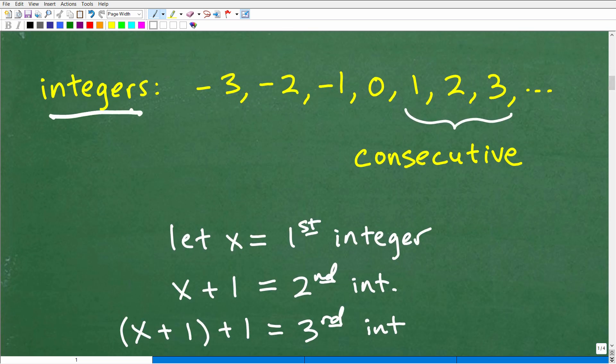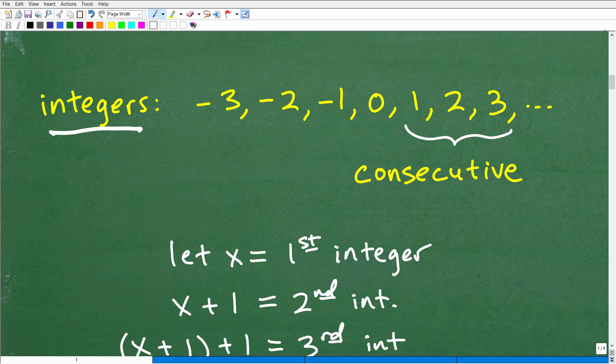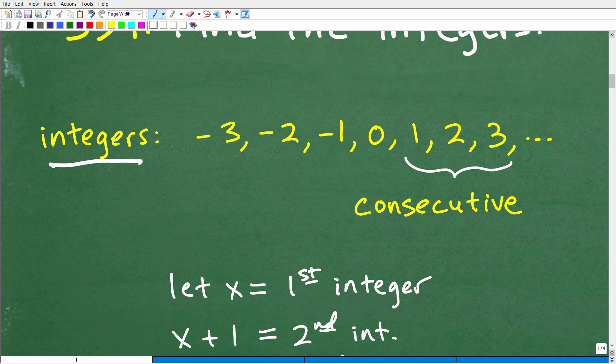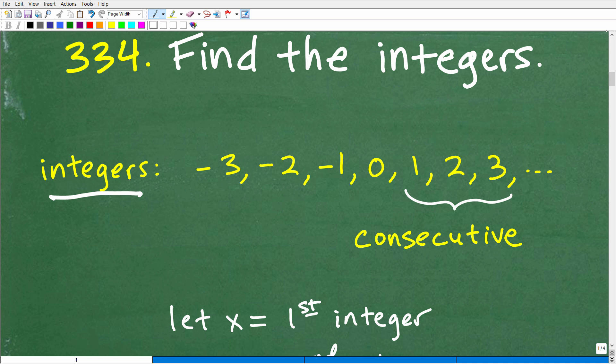Now, integers are a type of number, okay? They're a subset of the real numbers. So negative 3, negative 2, negative 1, 0, 1, 2, 3. These right here are what we call integers on the real number line. Now hopefully you remember that, and again, this is part of the real number set.